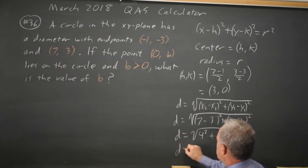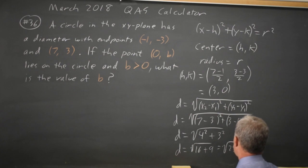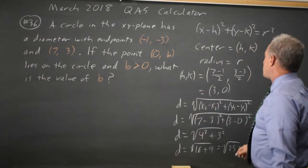And that's familiar. That's 16 plus 9, square root is root 25 equals 5. So my radius is 5.